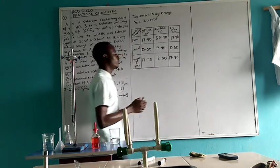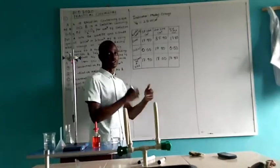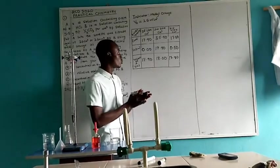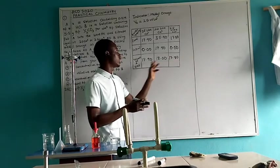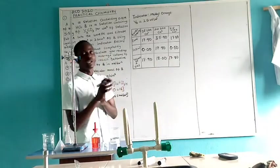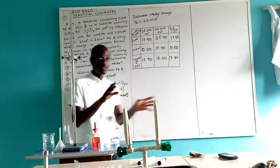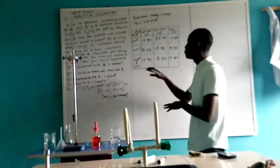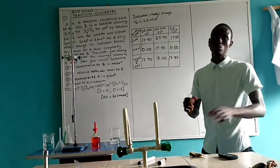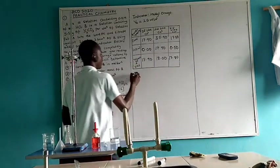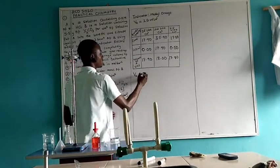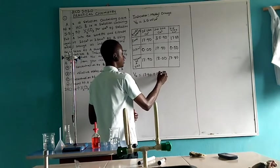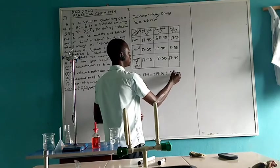Look at this. The difference between these and these is 0.2. The difference between these and these is 0.1. The difference between these and these is 0.1. So we can say we have consistency with our three values. Then we can go ahead and calculate the average volume of acids, which is called the titer value.